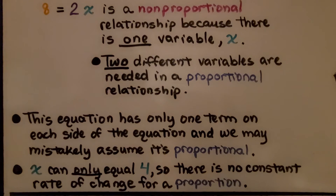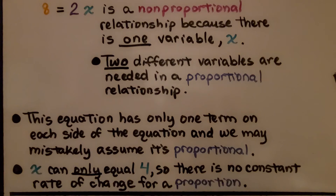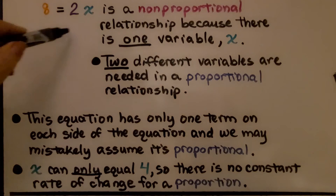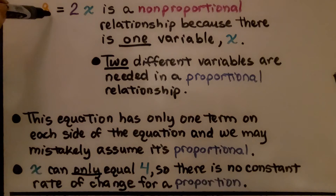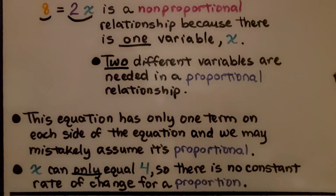Take a look at this equation: 8 equals 2x. That equation is nonproportional because there's only one variable, x. Two different variables are needed in a proportional relationship. We may mistakenly assume it's proportional since there's one term on each side, but x can only equal 4 because 2 times 4 is 8. So there's no constant rate of change — it's just one value, 4.